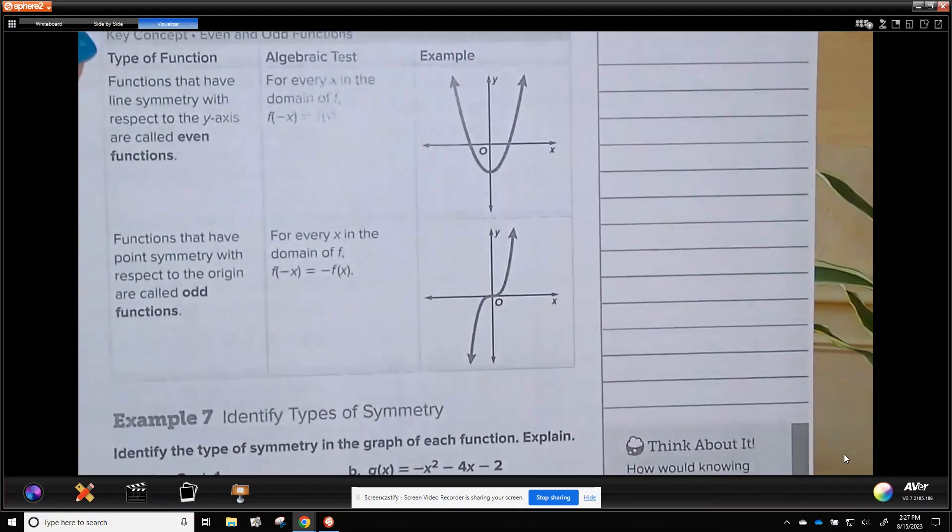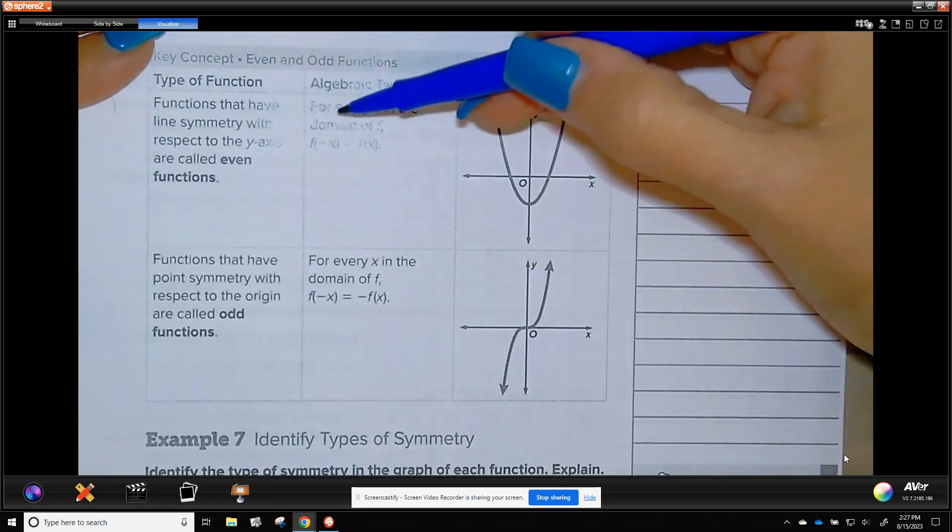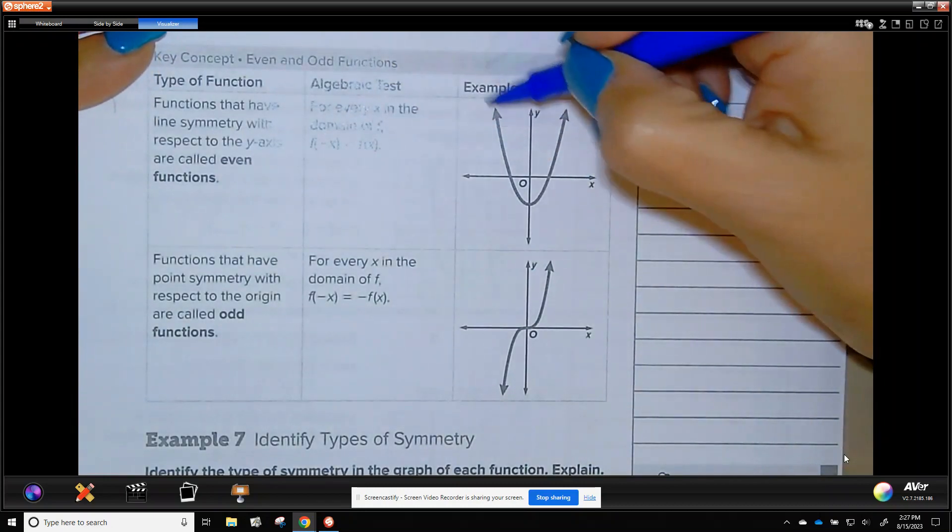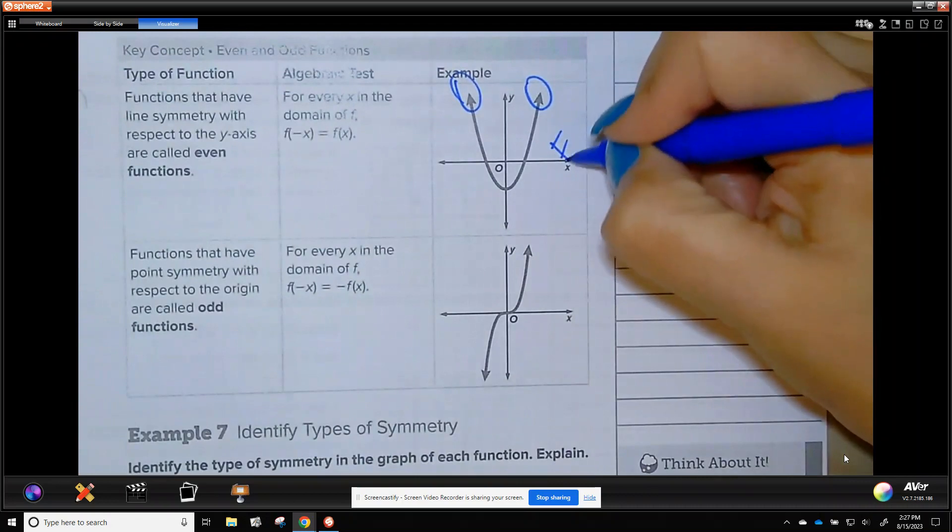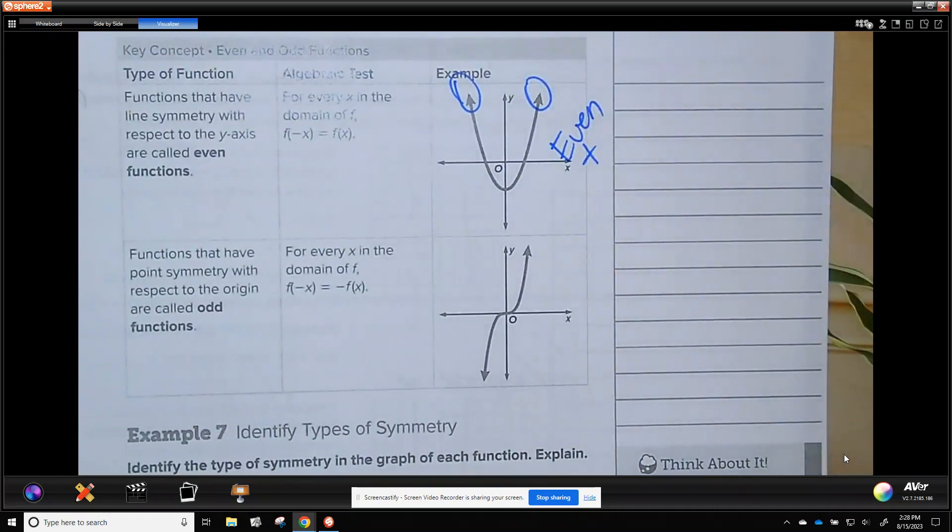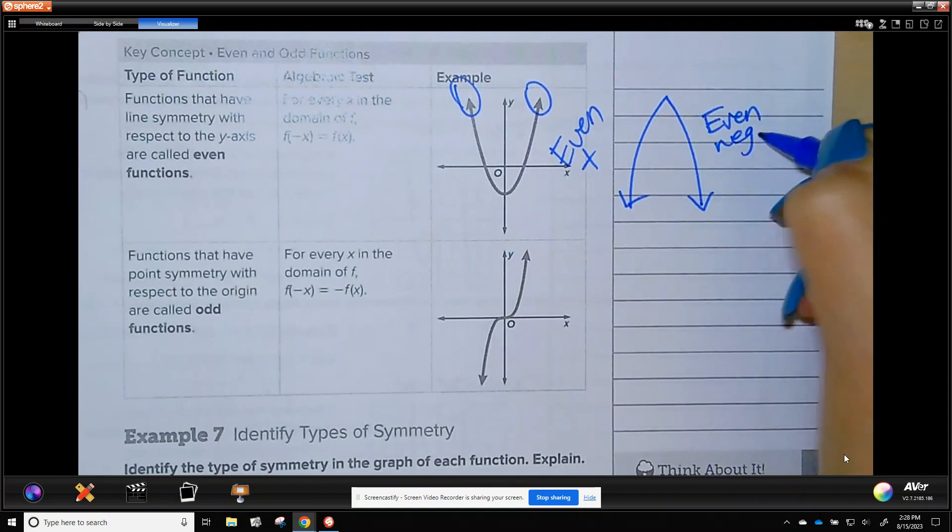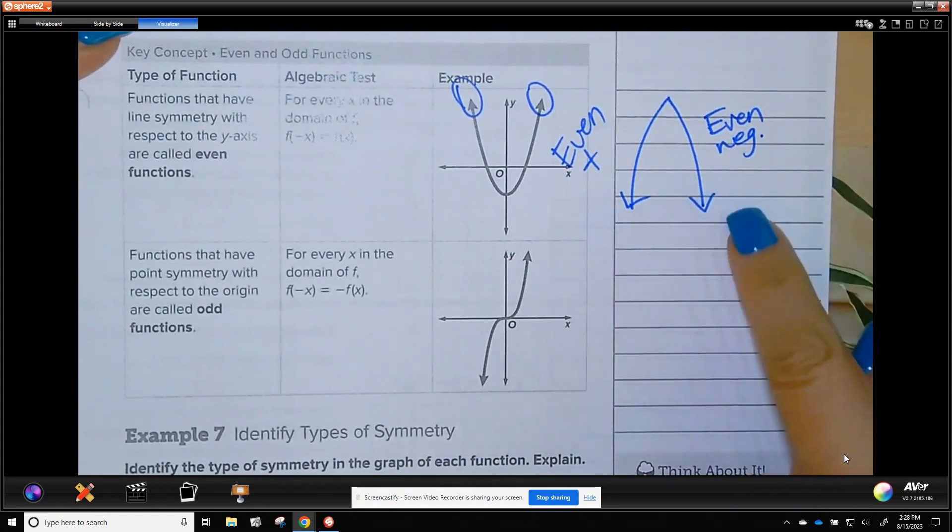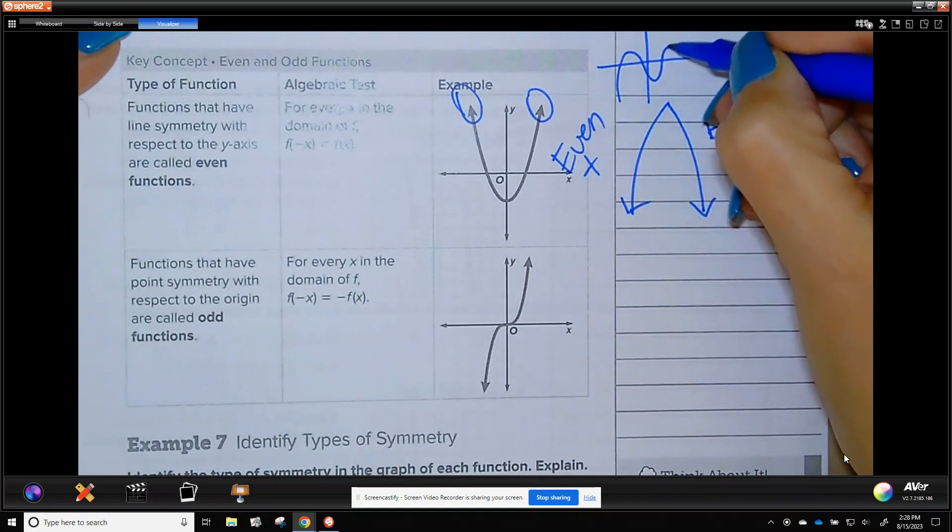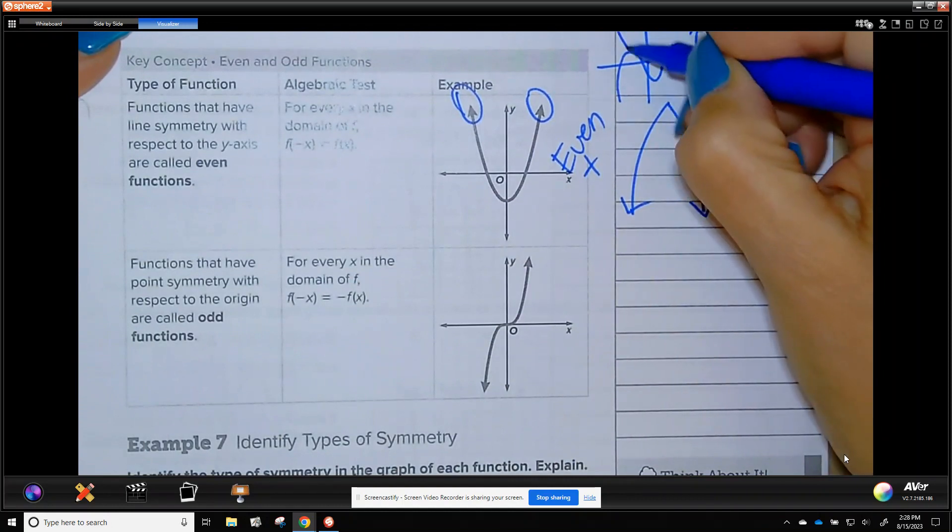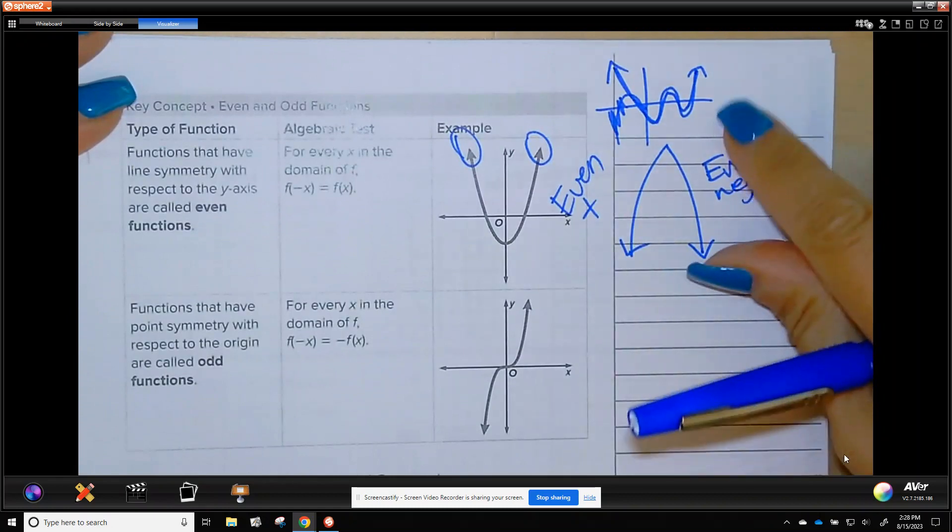Page 17. Here we are getting into even and odd, and we'll do more of it. Again, they want you to plug in negative x for f of x. These two ends go the same direction. This is even. This is even positive because it is going up. This is even negative. Both ends are going down. So, now, these are parabolas, but if you had something like this, that's even positive, because both ends are going up.